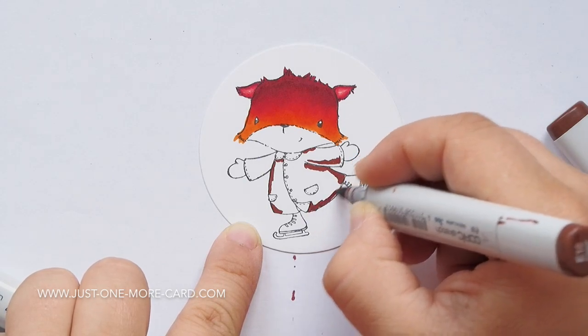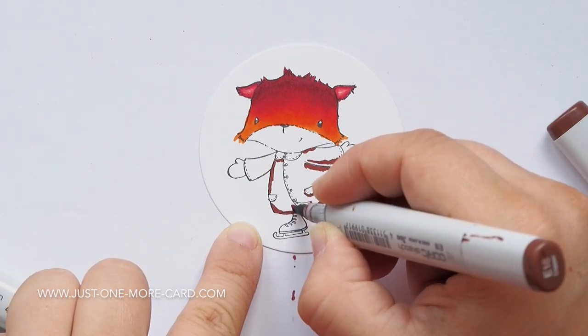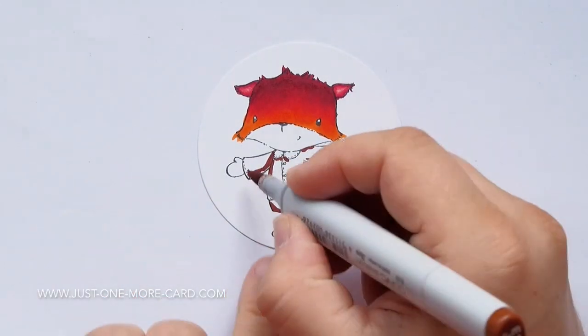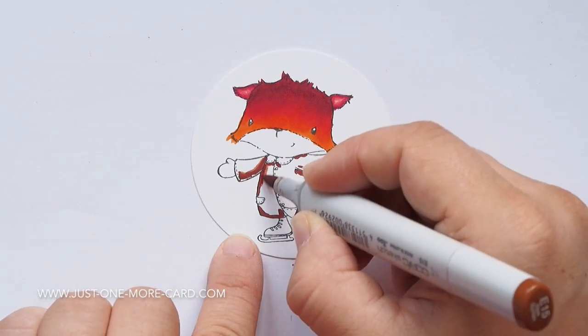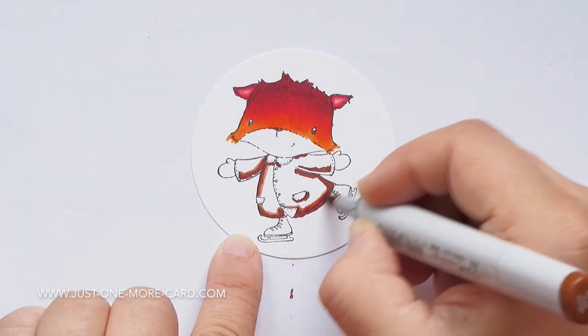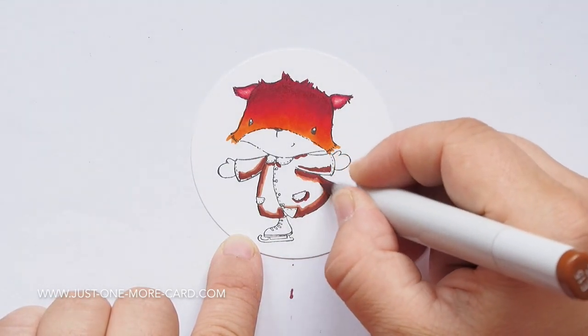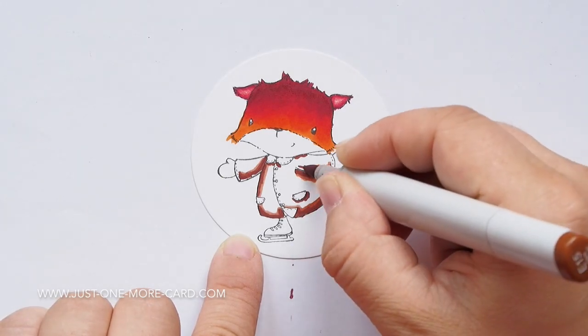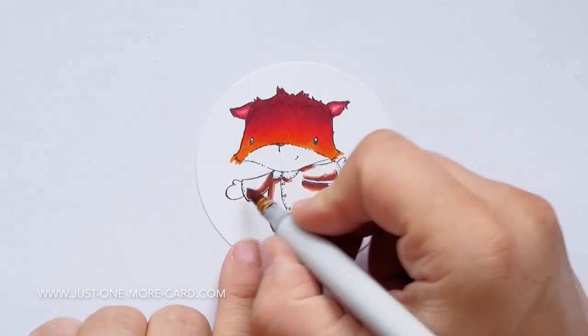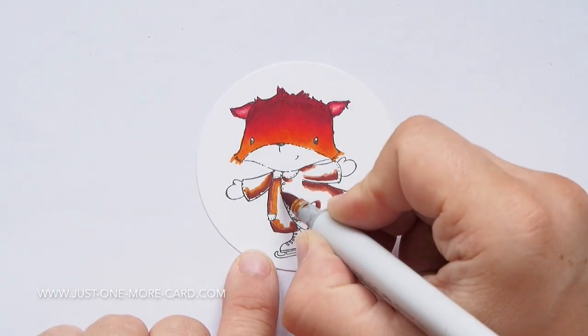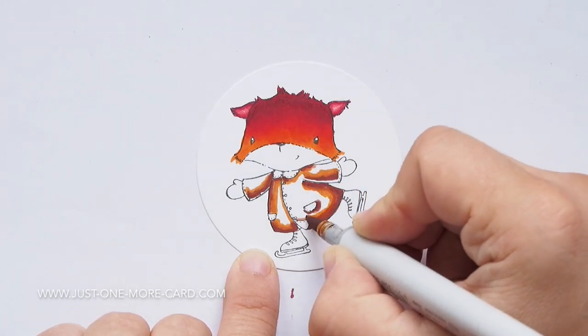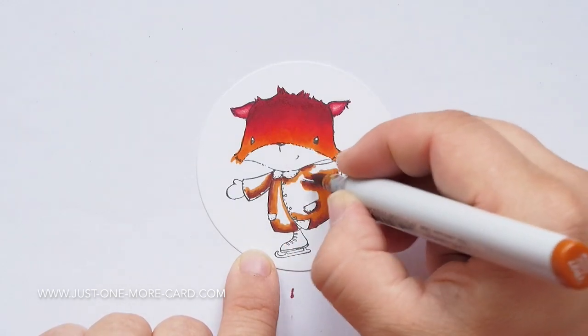Since I knew that my background would be mainly green and blue, I decided to use some browns on the coat of the fox here because I didn't want to have a very bright color that would distract from the background. I wanted to have a nice contrast, so going dark on the coat would be a nice contrast against the bright background that I'll be creating later on.